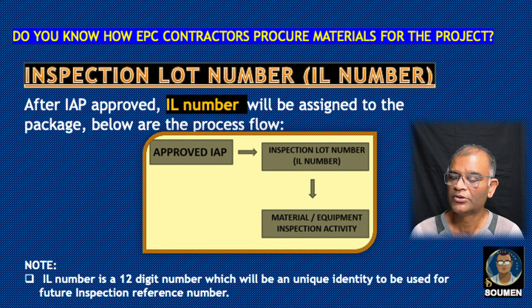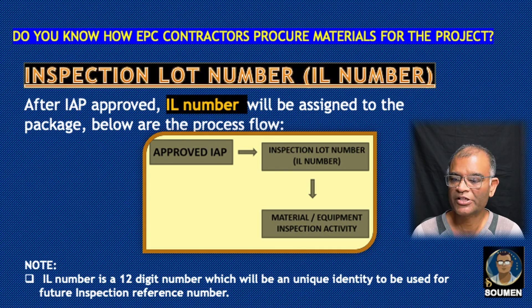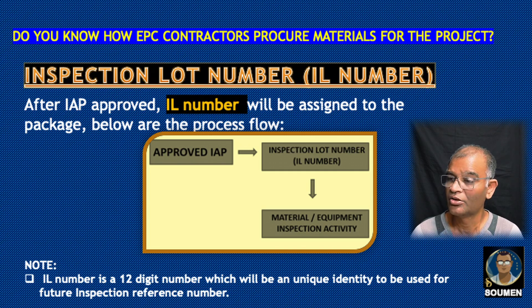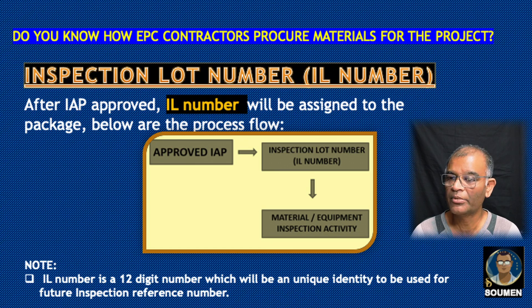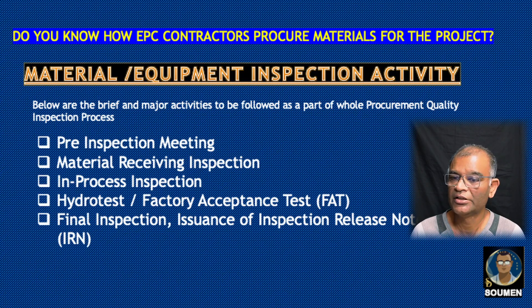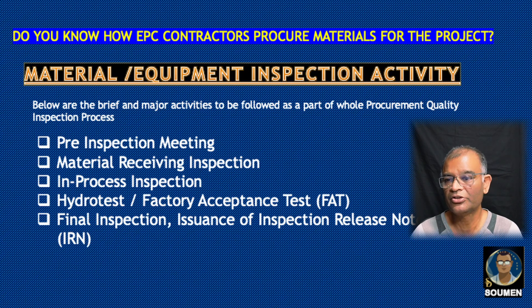The Inspection Lot (IL) number is a unique 12-digit number used to identify the future inspection reference for a particular material. Once the IAP is approved, the IL number will be assigned to the package. Without the IL number, nobody will inspect the material. The approved IAP leads to the IL number, and then material or equipment inspection activity may proceed.